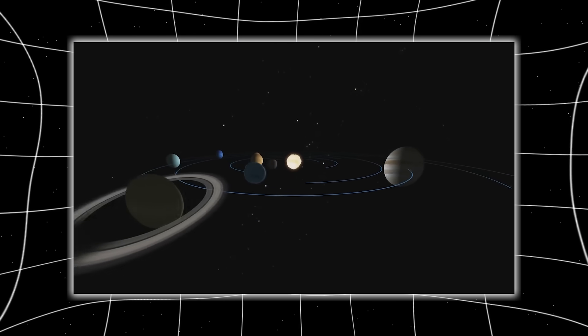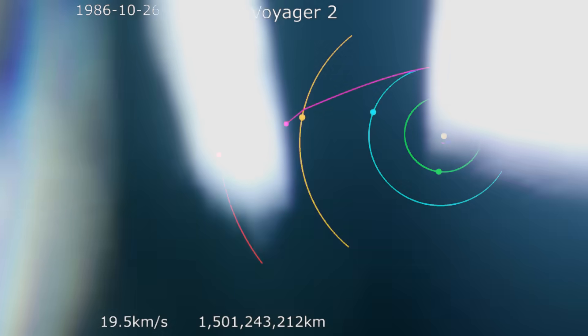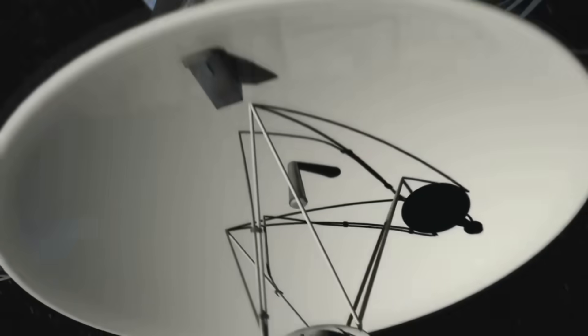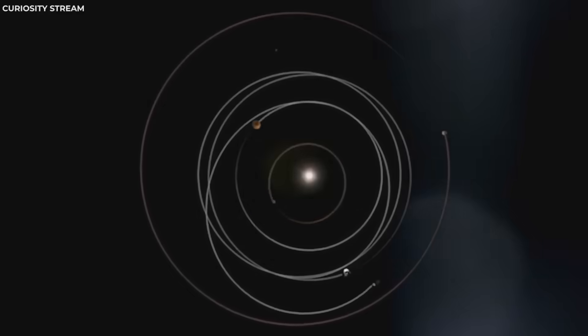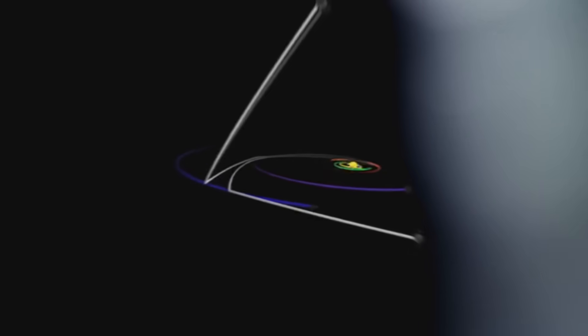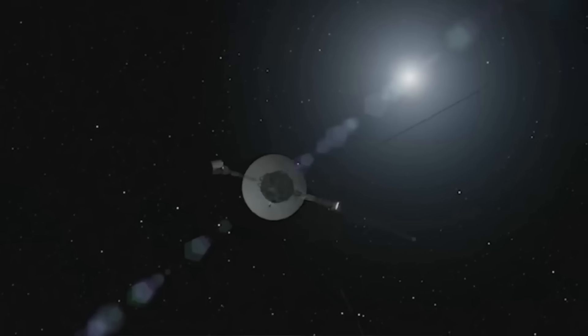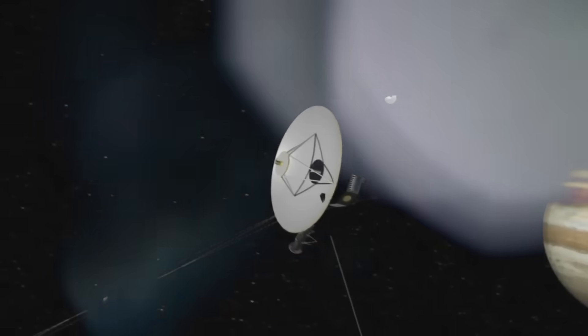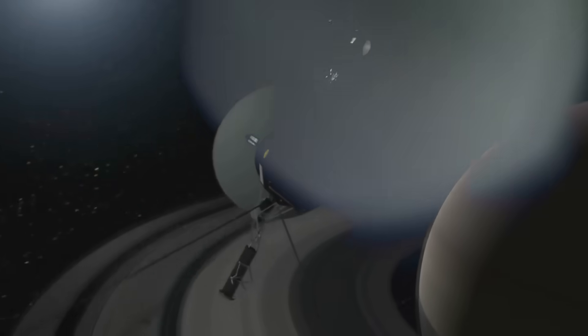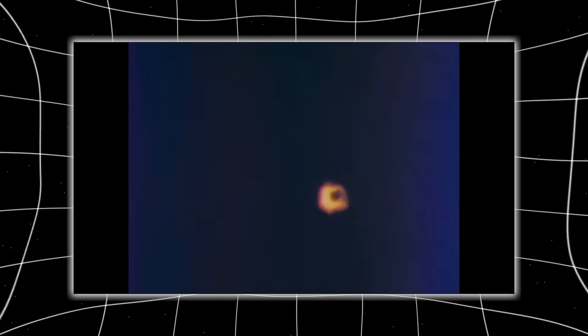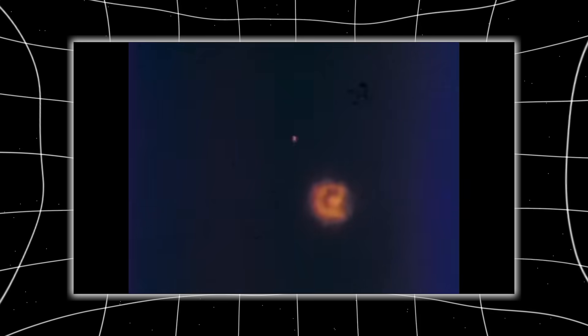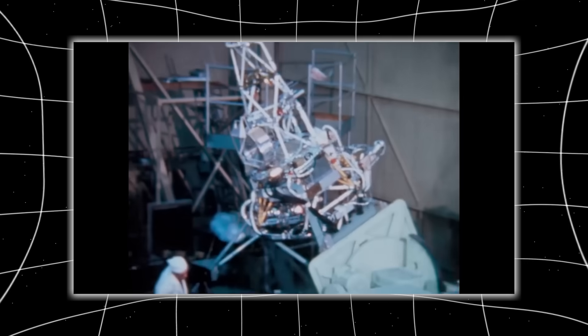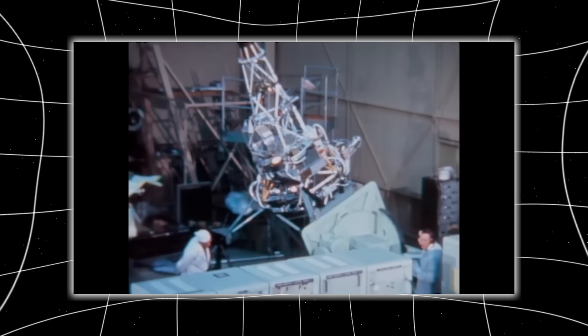But recently, NASA received a transmission so precise, so unexpected, and so deeply unsettling that it made scientists question the very architecture of our cosmic neighborhood. Because Voyager 2 didn't just cross into deep space, it discovered something hiding in plain sight. A boundary sharper than a blade, a silence that wasn't quite silent, and a pattern in the chaos that no one had dared to expect. What did Voyager 2 finally reveal that we've all been ignoring? And why does it change everything we thought we knew about our place in the universe?